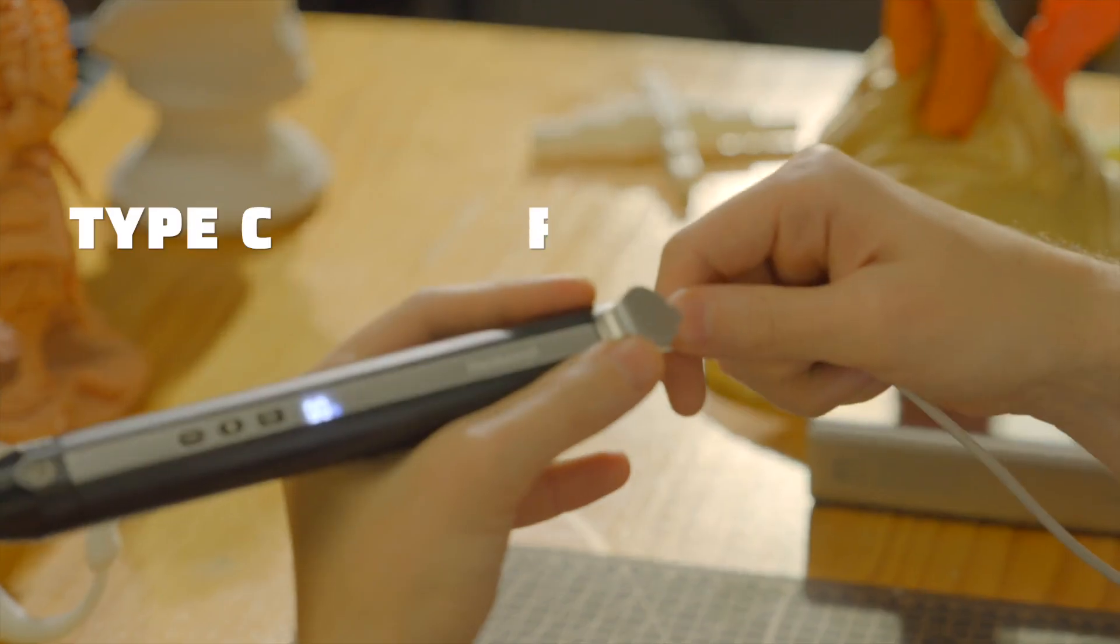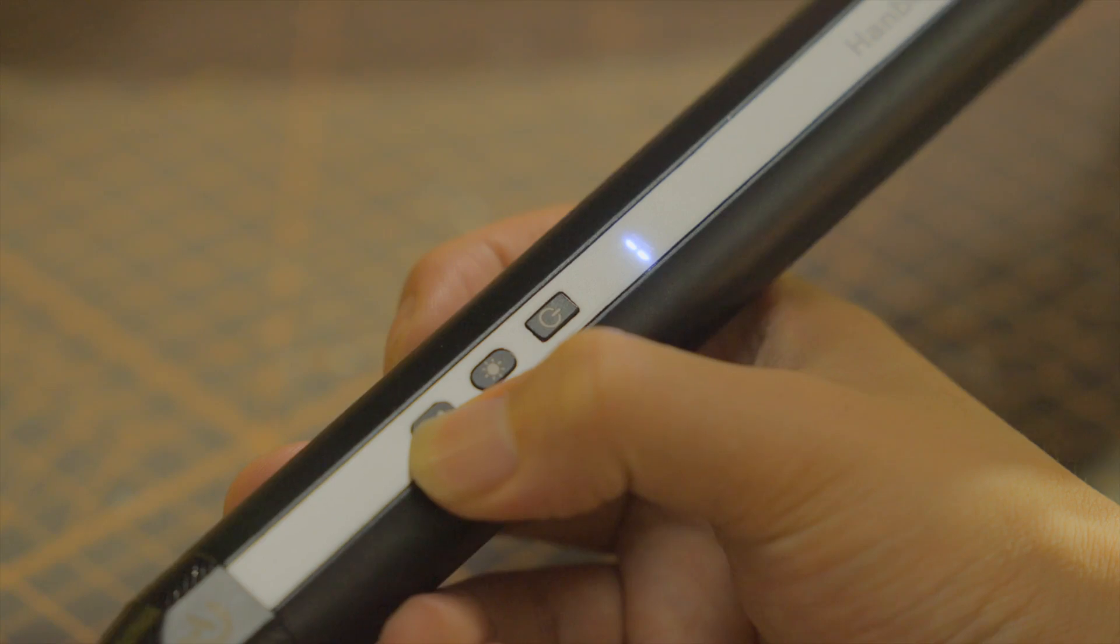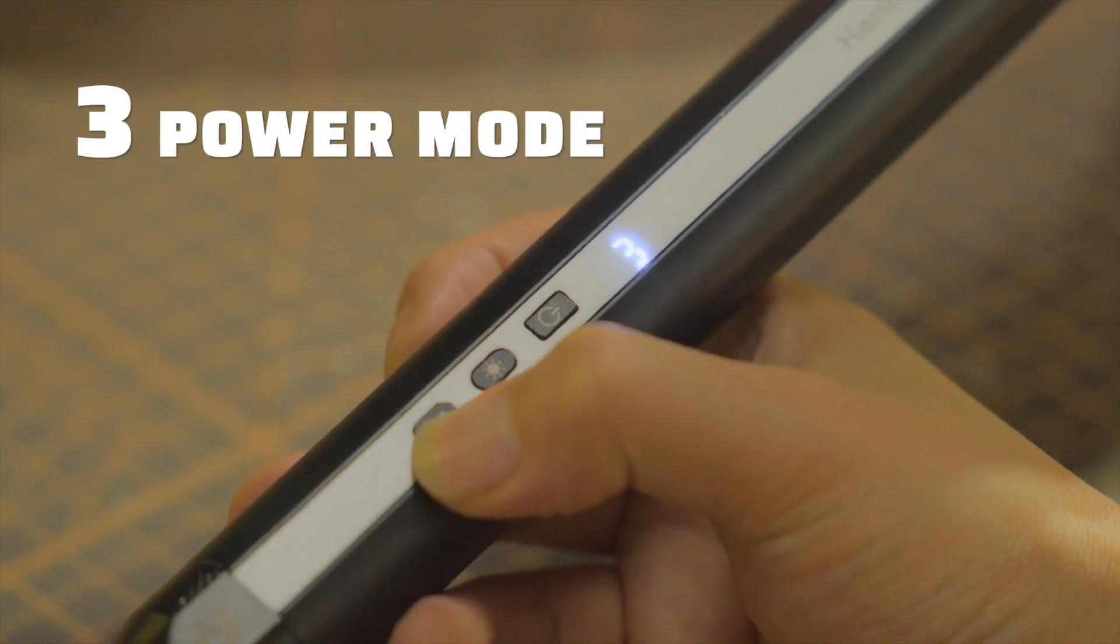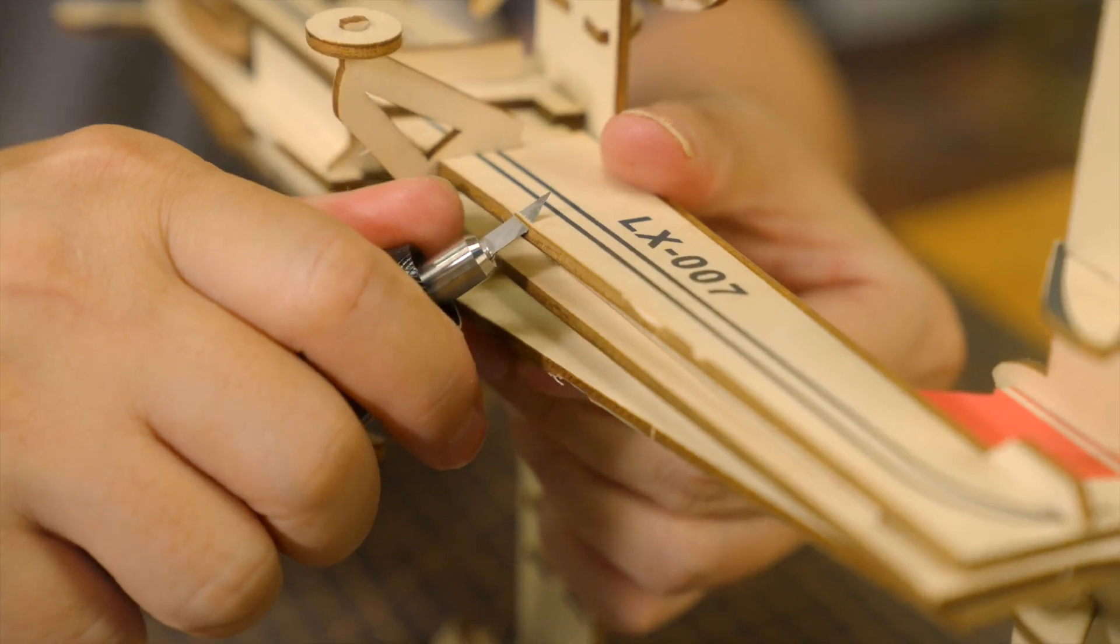Type-C fast charging keeps everything powered up and ready to go. And you can easily tailor the power to your cutting needs with three power modes to deliver perfect results.